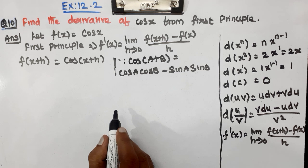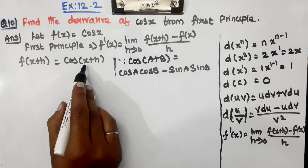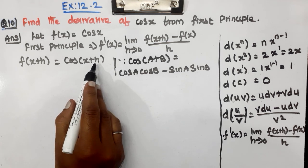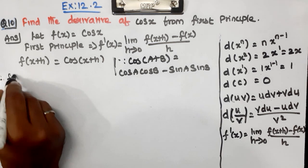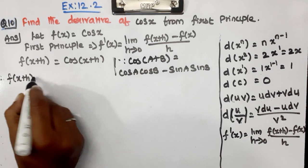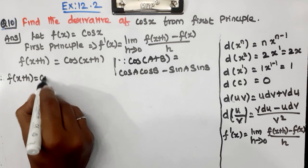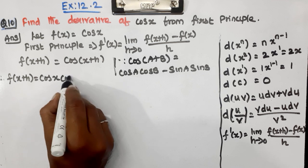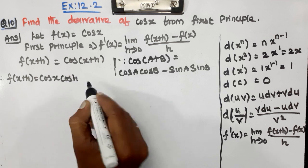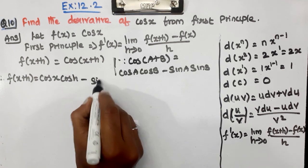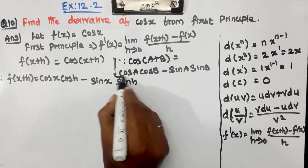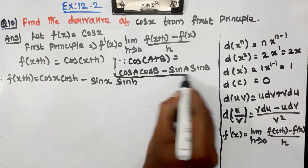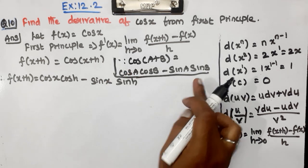We substitute a = x and b = h. Therefore, f(x + h) = cos x · cos h − sin x · sin h.